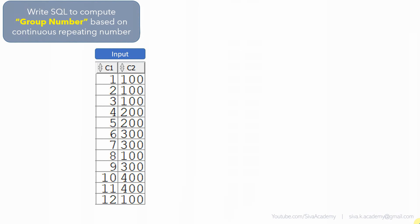We are provided with a table which contains two columns: Column 1 and Column 2. Column 1 basically contains a sequence of numbers — it is the order in which the records are inserted into this table. Column 2 contains some repeating numbers. The expectation is we need to assign a group number based on the repetition.